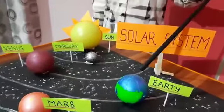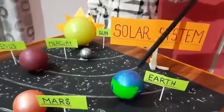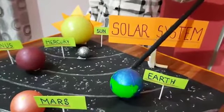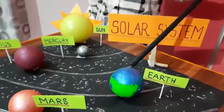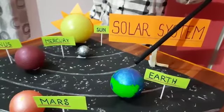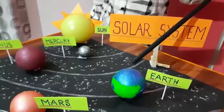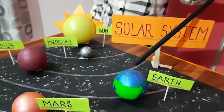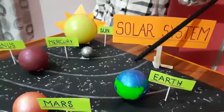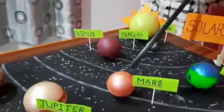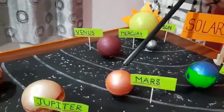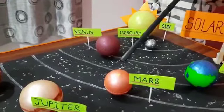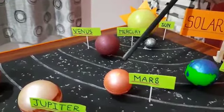This is Earth. It is the only planet which supports life. There are seven continents and five oceans. This is Mars. It is named after the Roman god.